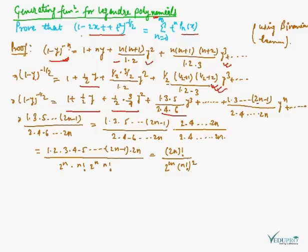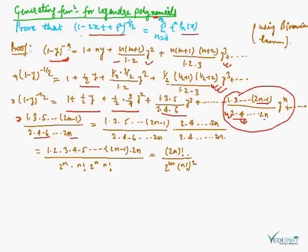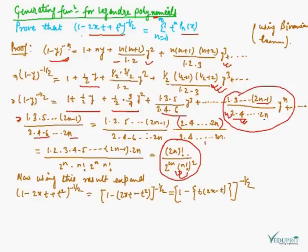The general term is (1·3·5···(2n−1)) / (2·4·6···2n) times y to the power n. We can rewrite this as (2n)! / (2^(2n) · (n!)^2). This result will be used in the expansion of (1 minus 2xt plus t squared) to the power minus half.